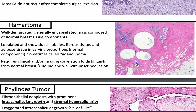Hamartomas are not biphasic proliferations. They are composed of benign, normal tissue elements — in the breast you'll have adipose tissue, smooth muscle, stromal cells, and epithelium — just disorganized, growing in varying proportions. This is a case where clinical and radiologic correlation is important, because otherwise you might just consider it normal breast. Radiologically it will be a round, well-circumscribed lesion — a generally encapsulated mass composed of normal breast tissue components: ducts, lobules, fibrous tissue, and adipose tissue in varying proportions. Sometimes called an adenolipoma.